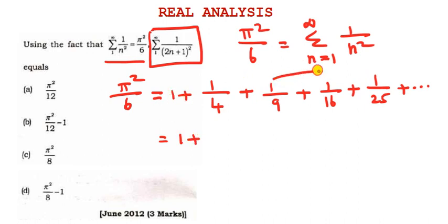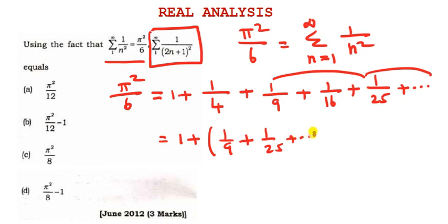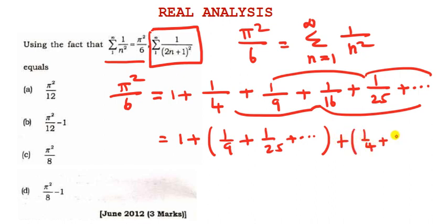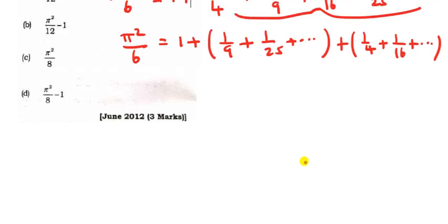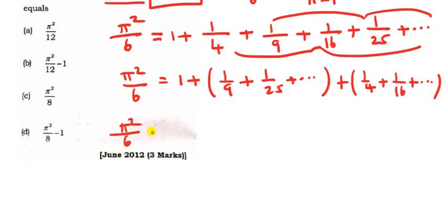So the expanded series is: 1 by 1 plus 1 by 4 plus 1 by 9 plus 1 by 16 plus 1 by 25 plus etc. This equals pi square by 6.